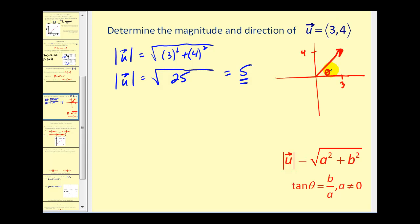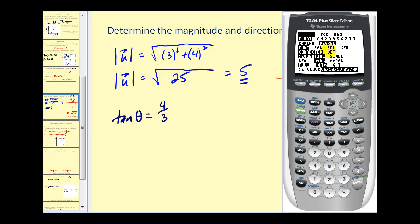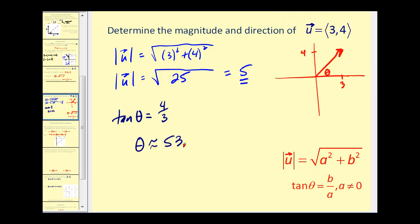This will be our direction angle. So tan θ must equal b/a, or 4/3. Let's go to our calculator. We're in degree mode. Inverse tangent 4/3, so θ is approximately 53.1 degrees, which is our direction angle.